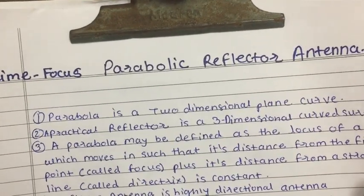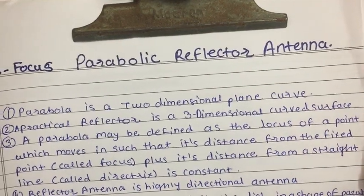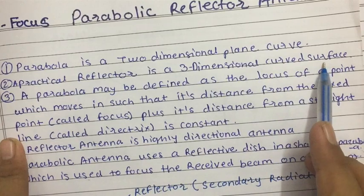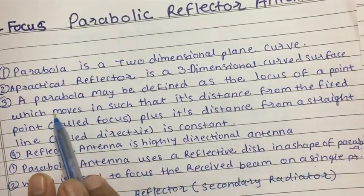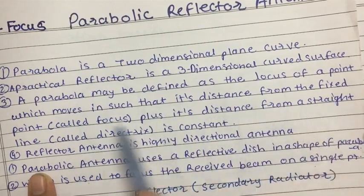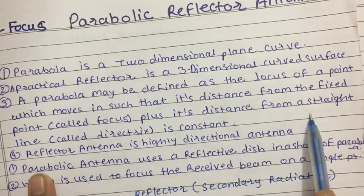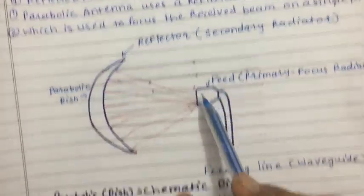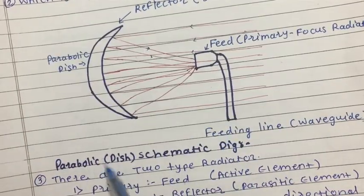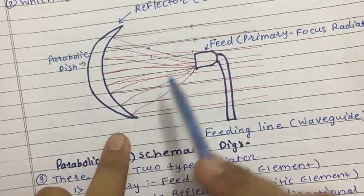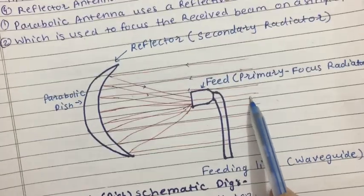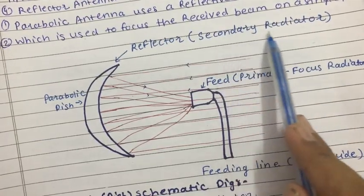The third type of antenna is the prime focus parabolic reflector antenna, also called a dish antenna. A parabola is a two-dimensional plane curve; a practical reflector is a three-dimensional curved surface. A parabola is defined as the locus of a point that moves such that its distance from a fixed point called the focus plus its distance from a straight line called the directrix is constant. It is a highly directional antenna. There are two types: a primary radiator which is the feed, and a secondary radiator which is the reflector.